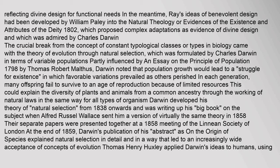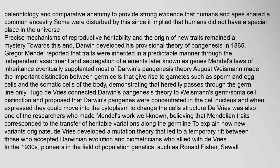Darwin developed his theory of natural selection from 1838 onwards and was writing up his big book on the subject when Alfred Russel Wallace sent him a version of virtually the same theory in 1858. Their separate papers were presented together at a meeting of the Linnean Society of London. At the end of 1859, Darwin's publication of On the Origin of Species explained natural selection in detail, leading to increasingly wide acceptance of evolution. Thomas Henry Huxley applied Darwin's ideas to humans, providing strong evidence that humans and apes shared a common ancestry.